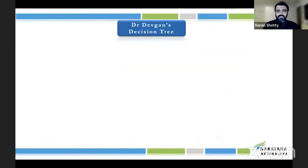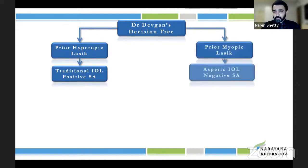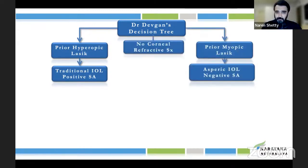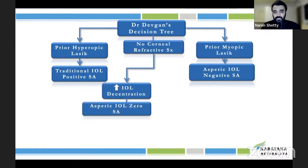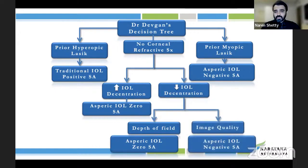Here's a simple decision tree on which lens to use. For prior hyperopic LASIK, go with a traditional or positive spherical aberration lens. For prior myopic LASIK, go with a negative spherical aberration lens. If no refractive surgery was done and there's a higher chance of decentration, always go with zero spherical aberration — even if the lens rotates, it won't cause much trouble. If there's less chance of decentration and you're focusing on depth of field, go with zero spherical aberration; for image quality, go with negative spherical aberration.